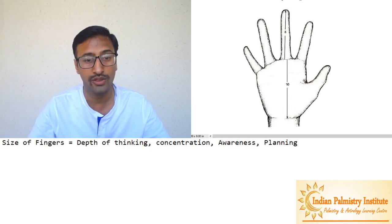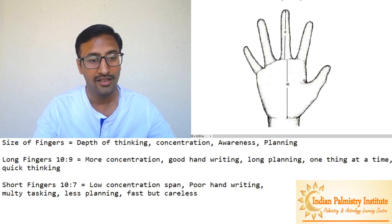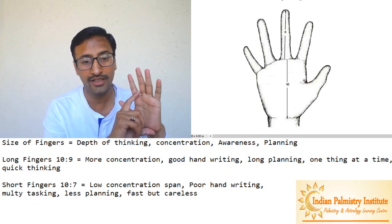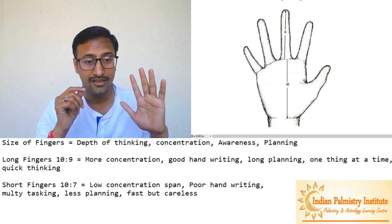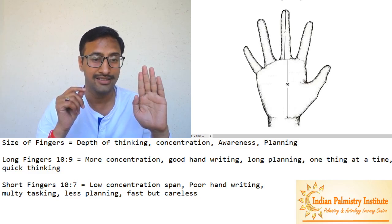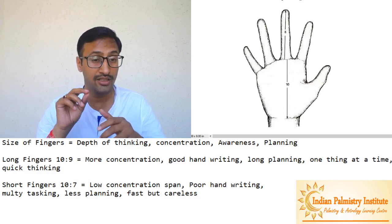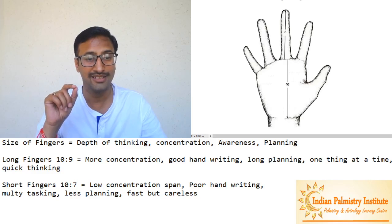So now we try to understand it. If somebody has long fingers - 10 is to 9, finger is 9 centimeter and palm is 10, it's a proportion, not actual size. The fingers will look long in the hand. Then these people will have more concentration. They do one job at a time. These people have very good handwriting. Why? Because they are worried about what I am doing. They are putting a lot of thinking, planning in their tasks, doing it with more awareness.